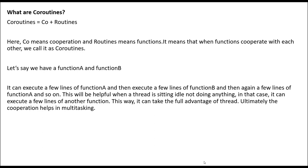Let's say we have function A and function B. It can execute a few lines of code in function A, then execute a few lines in function B, and then come back to function A and so on. So here you can see it is suspending function A, going to function B, and then resuming function A. This is what coroutines help us do — suspend and resume a function.